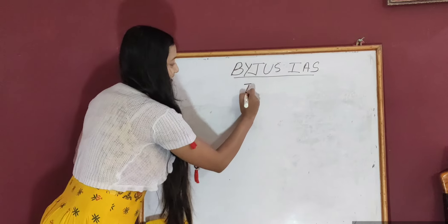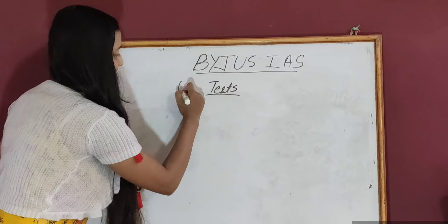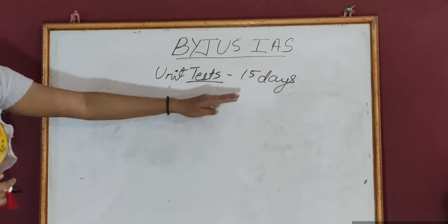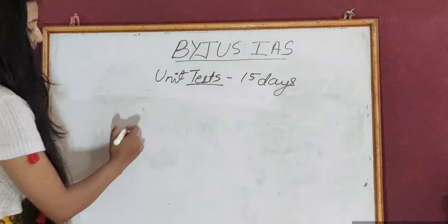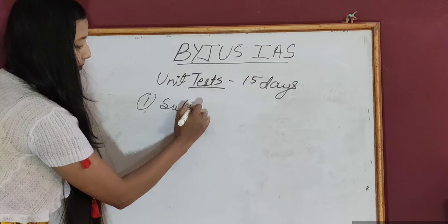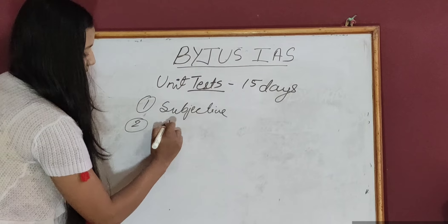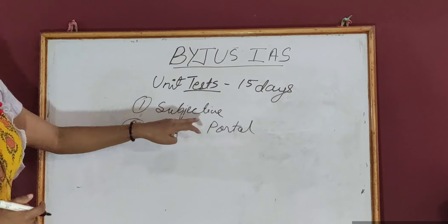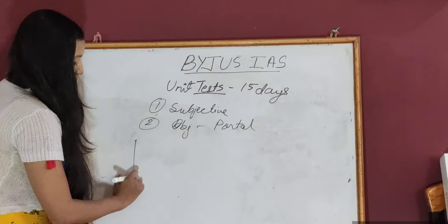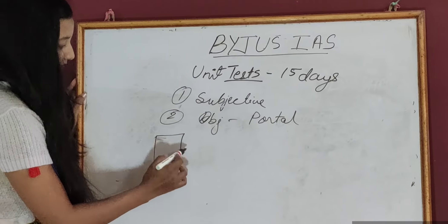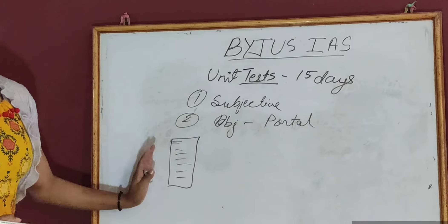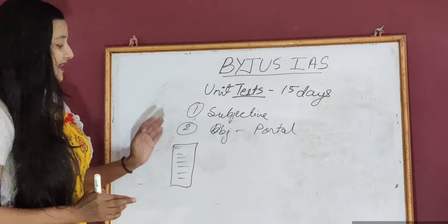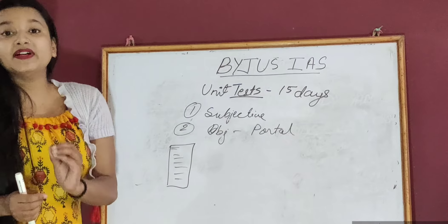Talking about tests — we have unit tests at an interval of every 15 days. The subjective questions will be mailed to your email ID and the objective ones will be uploaded on your portal. After the tests, you take a white sheet of paper, write your name, badge number, etc., write your answers, then send a photograph of your answers by mail to Byju's.